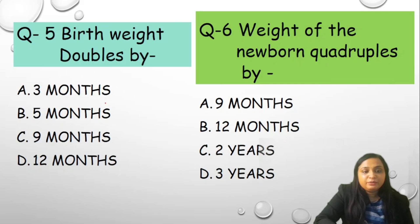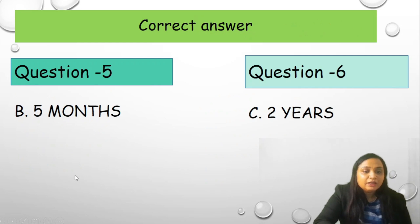Birth weight doubles by 5 months, 3 months, B 5 months, C 9 months, or D 12 months? Let's discuss first this question.